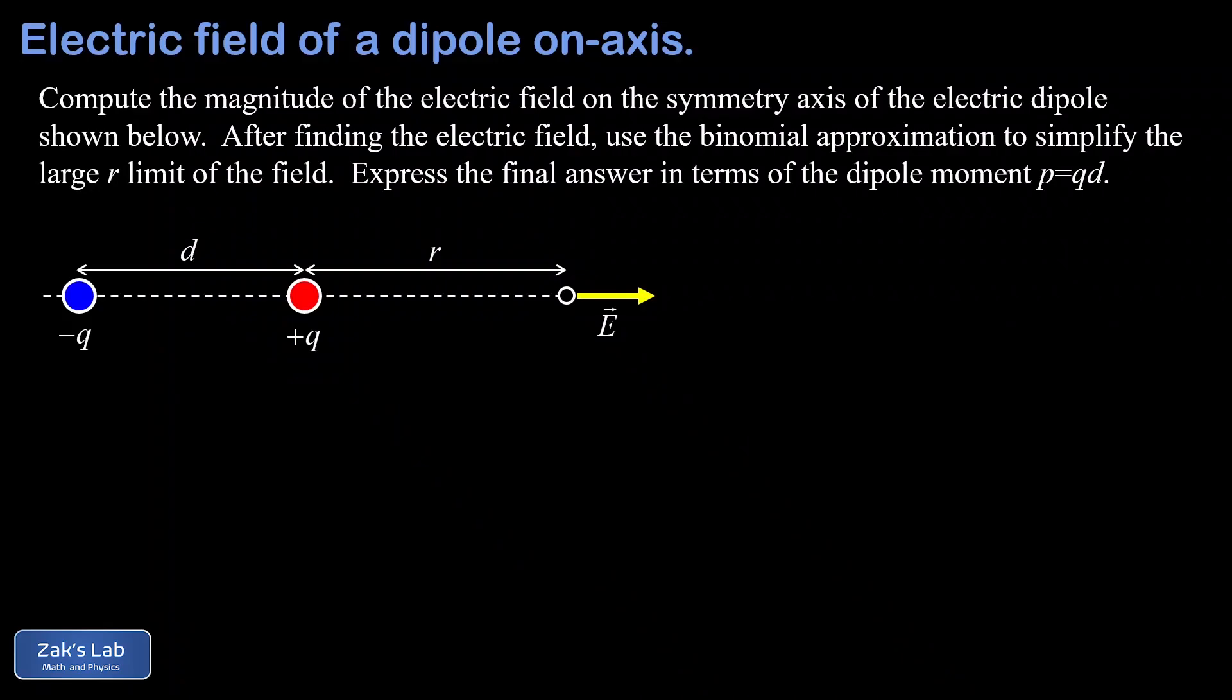In this video, we're going to compute the electric field due to an electric dipole at an observation point that lies along the axis of the dipole. This is sometimes called an axial point.